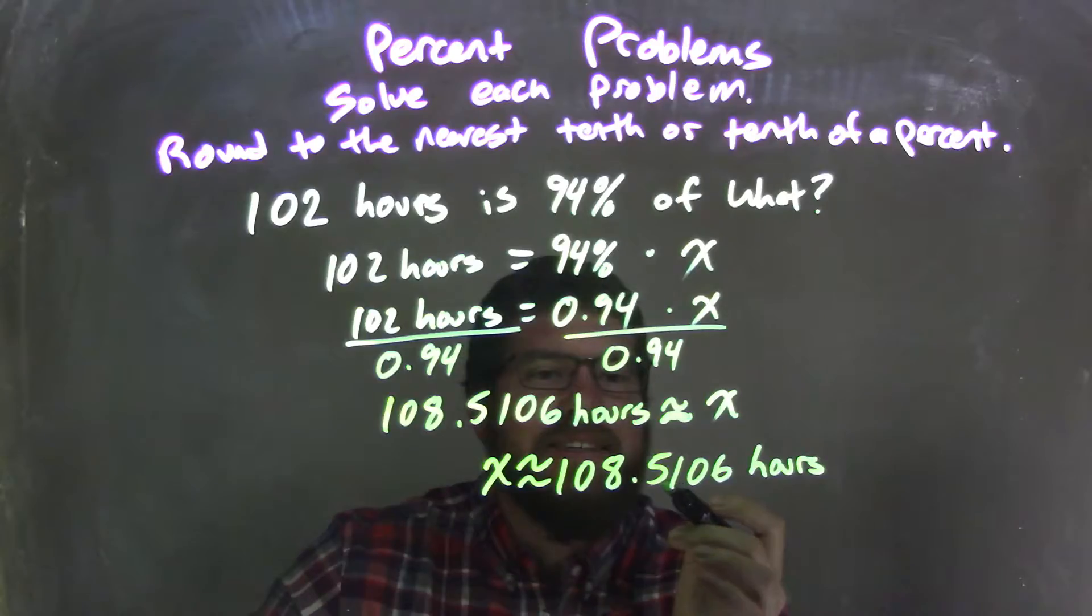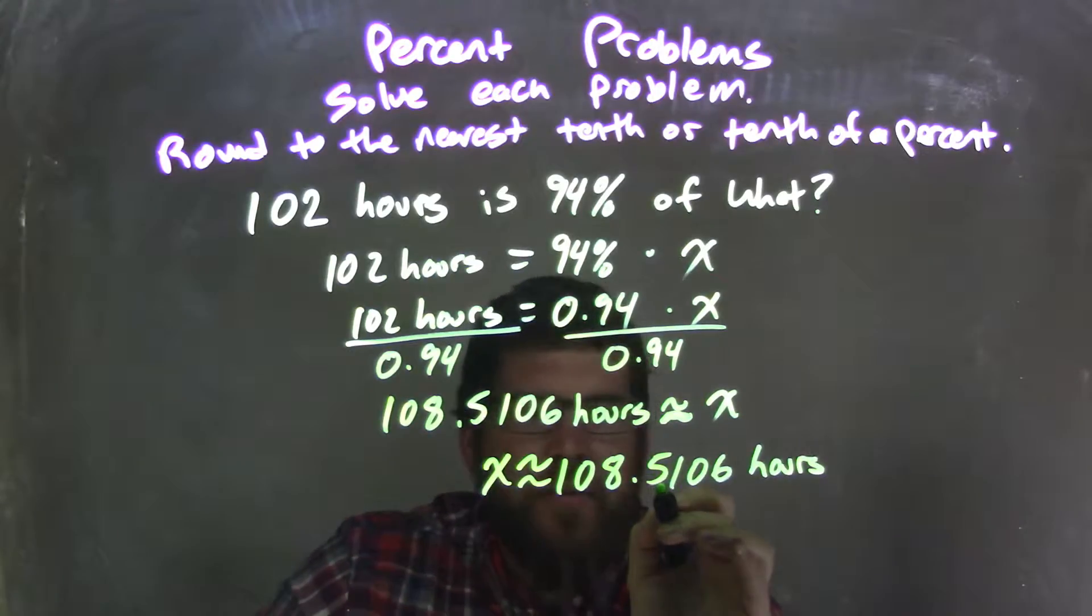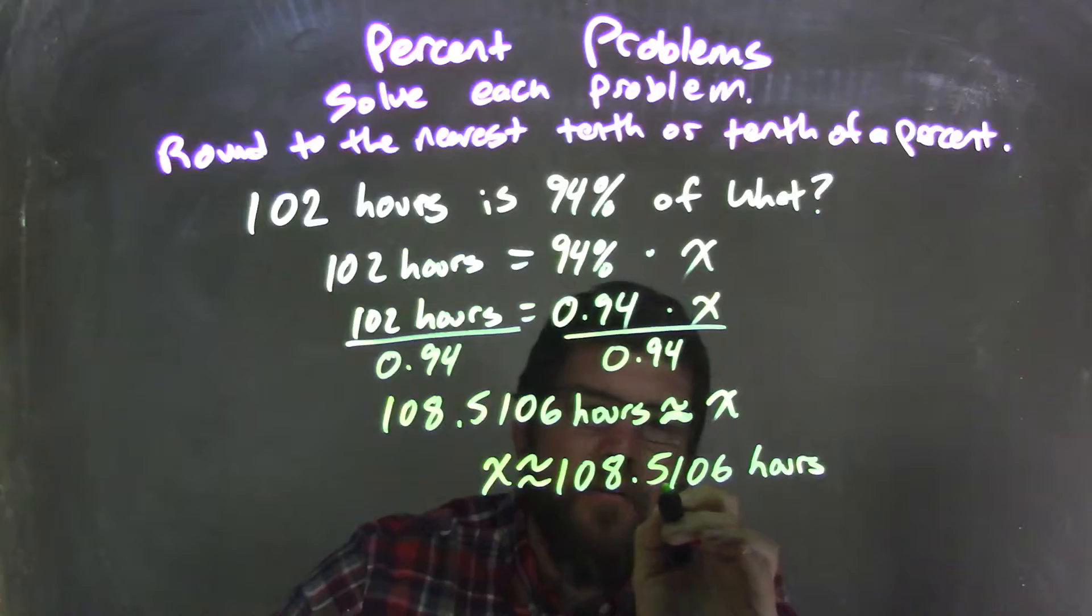Now I need to round that. Rounding to the nearest tenth, right? So the 5 and the 1, the 1 causes the 5 to stay where it is. It rounds down.